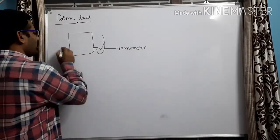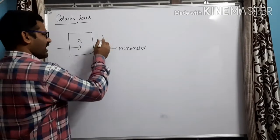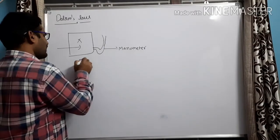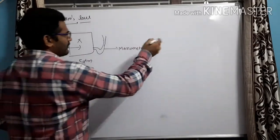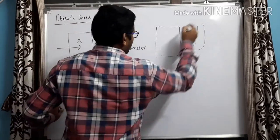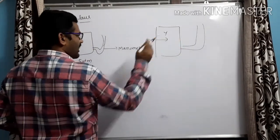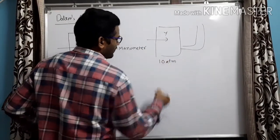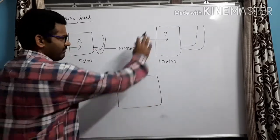I have evacuated the entire chamber. Now let us think — I am inserting a gas called X, and gas X shows a certain pressure. Let us say it is 5 ATM. Now I have again evacuated the entire chamber and taken a gas called Y. The gas Y shows some pressure — let us consider it shows a pressure of 10 atmospheres.